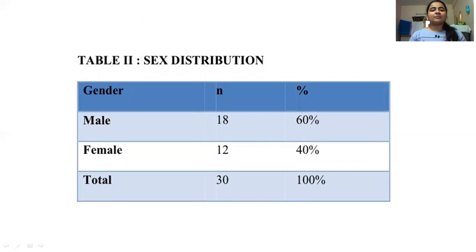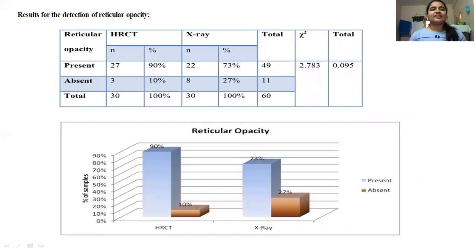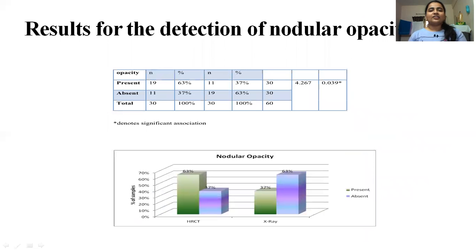In this study, 60% of the patients were male and 40% were female. For detection of reticular opacities, only 73% could be identified on X-ray while 90% could be identified on HRCT. For nodular opacities, only 37% could be identified on X-ray while 63% were identified on HRCT.